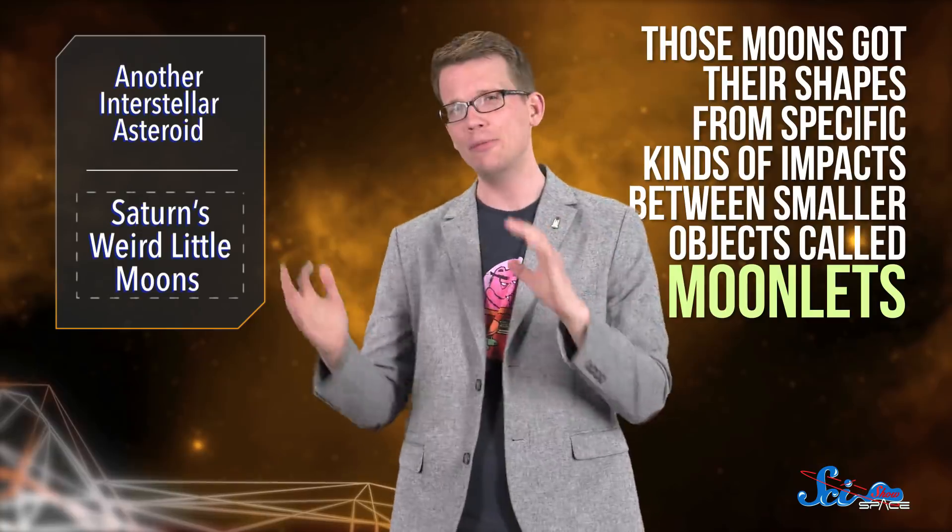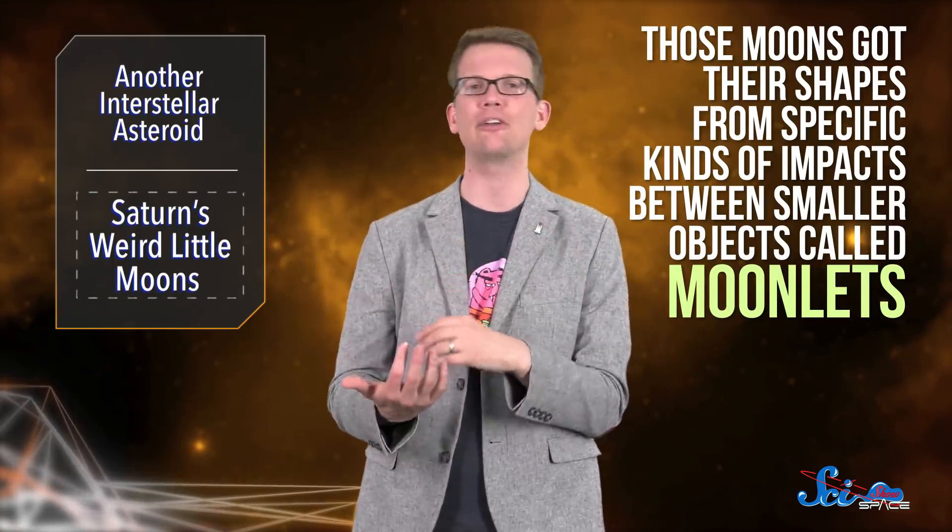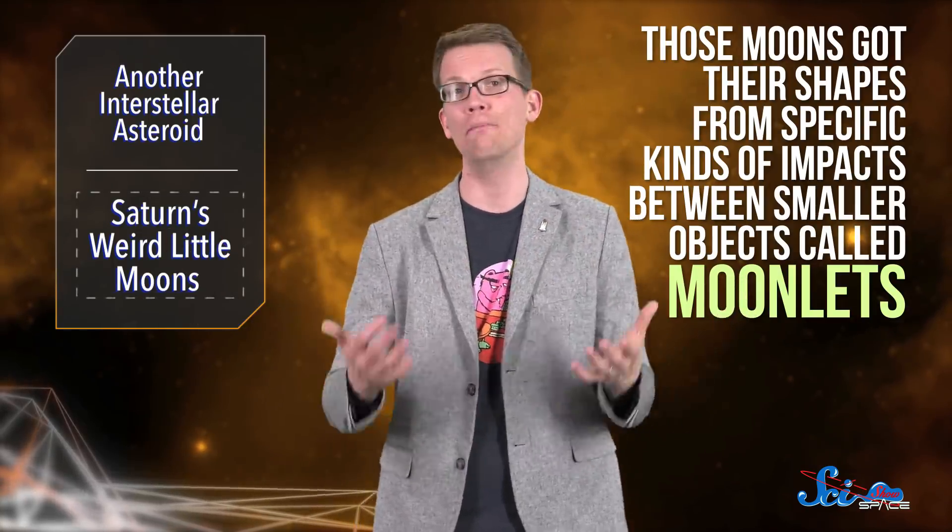We've wondered for a while why these tiny moons are shaped the way they are, and thanks to a paper published Monday in Nature Astronomy, we think we know. Based on a combination of modeling processes, the authors suggest those moons got their shapes from specific kinds of impacts between smaller objects called moonlets.